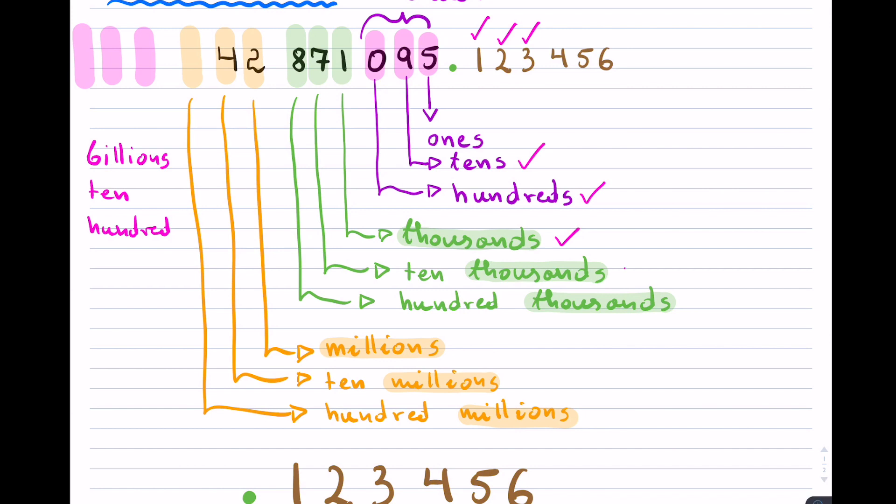And then it would have been ten-thousands, hundred-thousands, and then it would have been millionths, ten-millionths, and so on if we had more of these place values here.